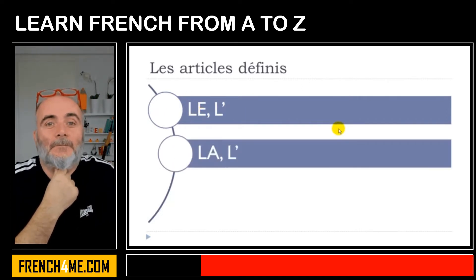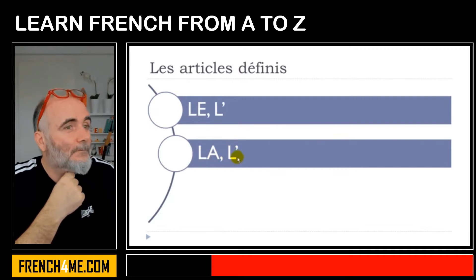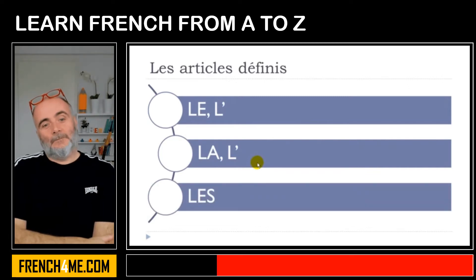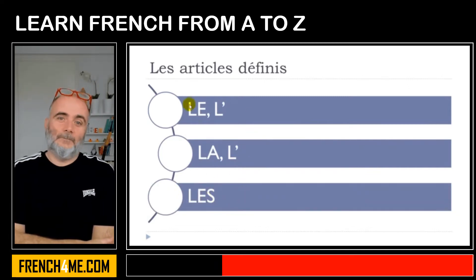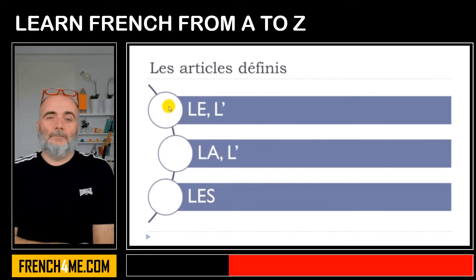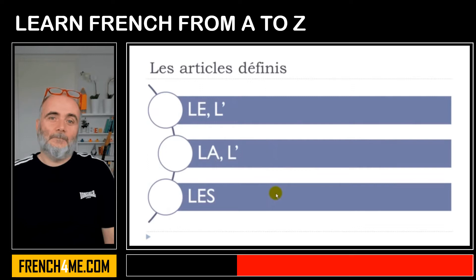Then 'la', the feminine form. For the same reason, you will have the option L' as well. And then the plural form is 'les'. So whereas in English you get only 'the', in French we have the difference between the masculine form 'le', the feminine form 'la', and then the plural form 'les'.